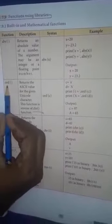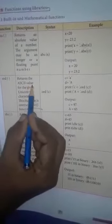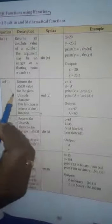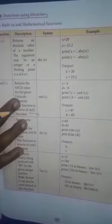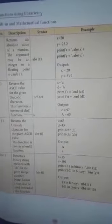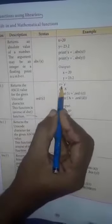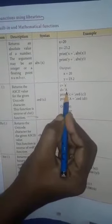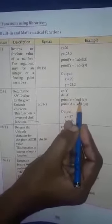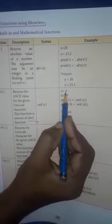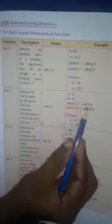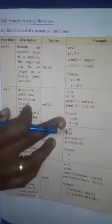Next function is ord(). It returns the ASCII value for the given unicode character. This function is the inverse of the chr() function. Syntax: ord(c). Example: c = 'a' (small letter a) and d = 'A' (capital letter A). Print ord(c) and ord(d). The ASCII value of small 'a' is 97, and the ASCII value of capital 'A' is 65.